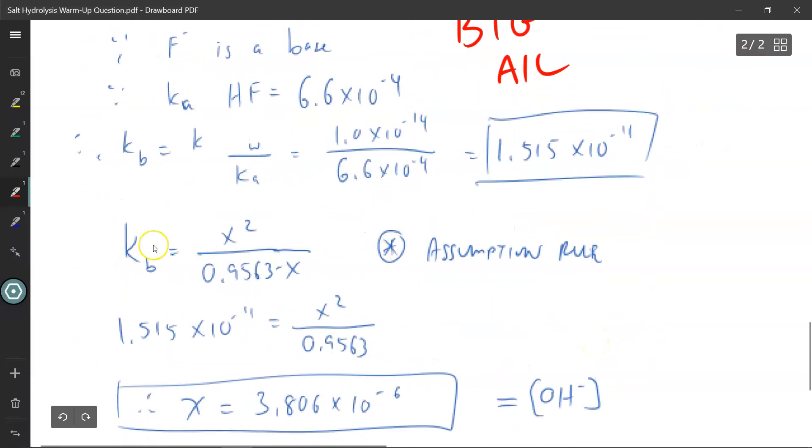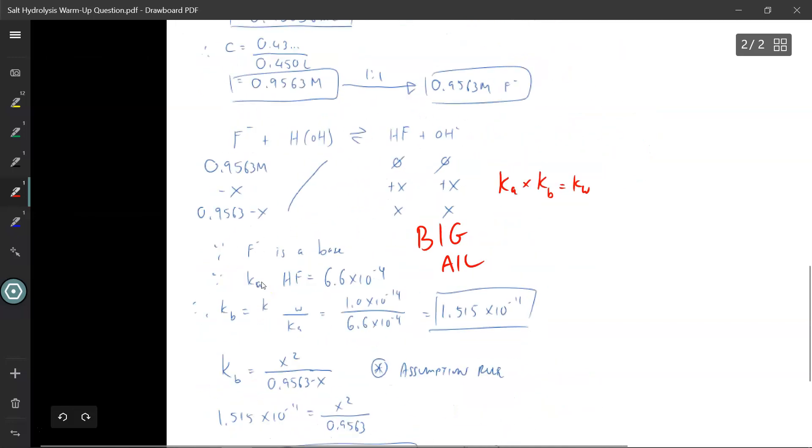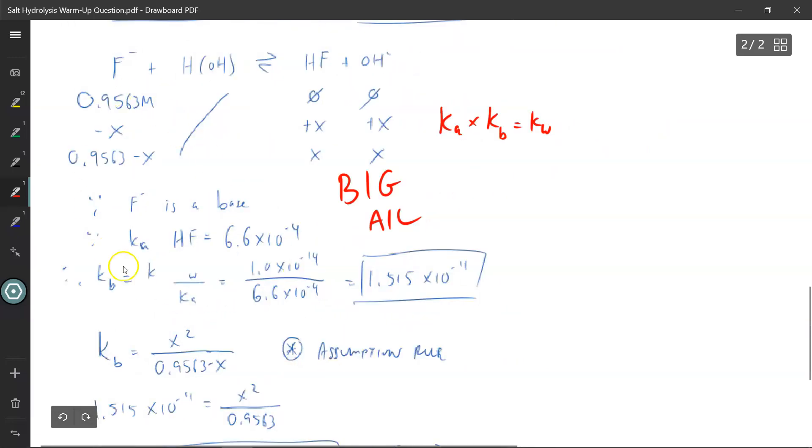From there, I can write down my Kb expression. Kb is equal to x squared divided by 0.9563 minus x. So if you look back to my ICE chart, products over reactants, x squared, 0.9563 minus x.